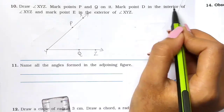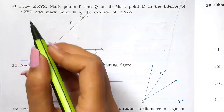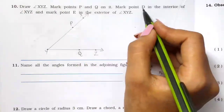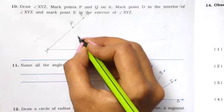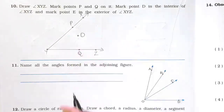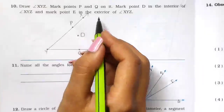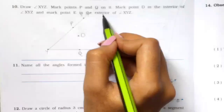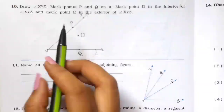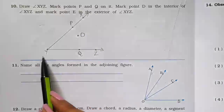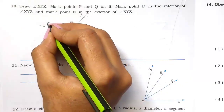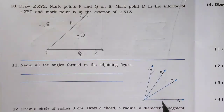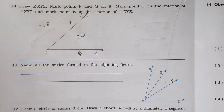Then mark point D in the interior of angle XYZ. The interior part of the angle is inside the angle, so we place point D there. Then mark point E in the exterior of angle XYZ. The exterior part is outside the angle arms. So we place point E in the exterior. That completes question number 10.